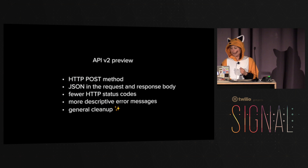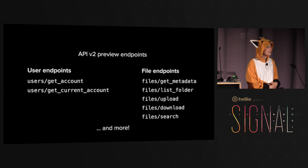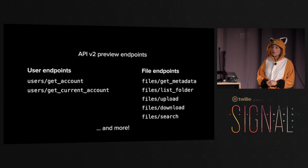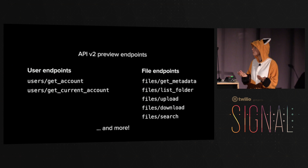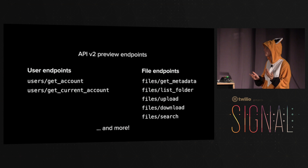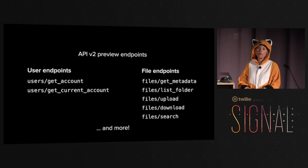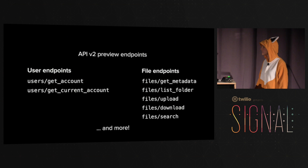We've only built a handful of endpoints so far for API v2 — what you'd expect to do with Dropbox. For your logged-in user you can get their account, and you can get the account for any Dropbox user if you know their user ID. You can get file metadata, list all files in a folder, upload a file, download a file. We just recently added full-text search over files, available to pro and business customers, and we've also added an API endpoint for search.